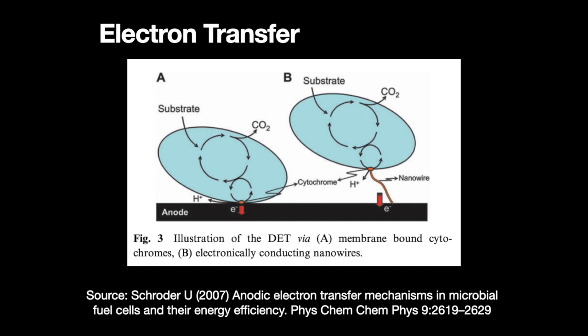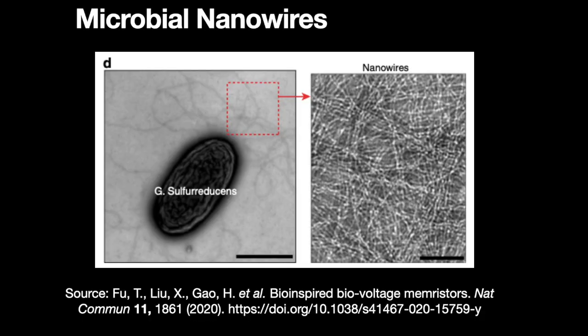Geobacter sulfurreducens is able to transfer electrons to the metal or sulfur from its surface using conductive cytochromes, or at a small distance from its surface using electrically conductive pili, which are hair-like strands coming from the bacteria. These conductive pili are made of proteins, and they act as conductive wires forming a circuit with the metal, and they are often called nanowires. The formation of nanowires is one of the most impressive parts of these bacteria, and they are very important in the function of a microbial fuel cell involving Geobacter sulfurreducens.